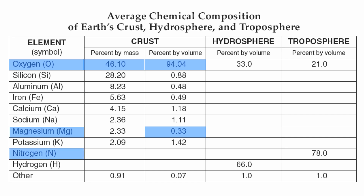We want to know what percentage of nitrogen is found in the troposphere by volume: 78.0%. Nitrogen is the most abundant element found in the troposphere. And finally, hydrogen — we want to know what percentage of hydrogen is found in the hydrosphere by volume: 66.0%. Hydrogen is the most abundant element in the hydrosphere.